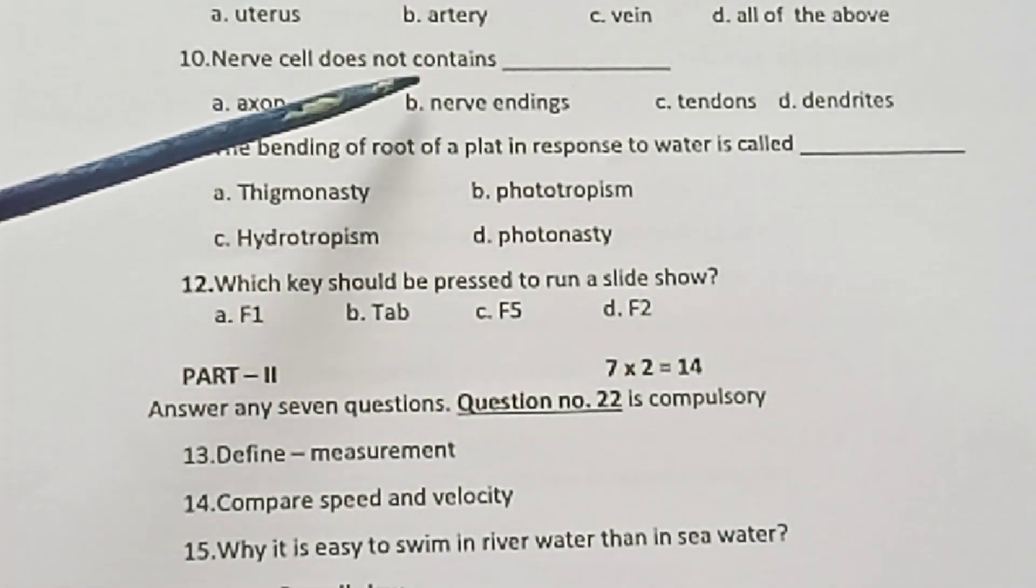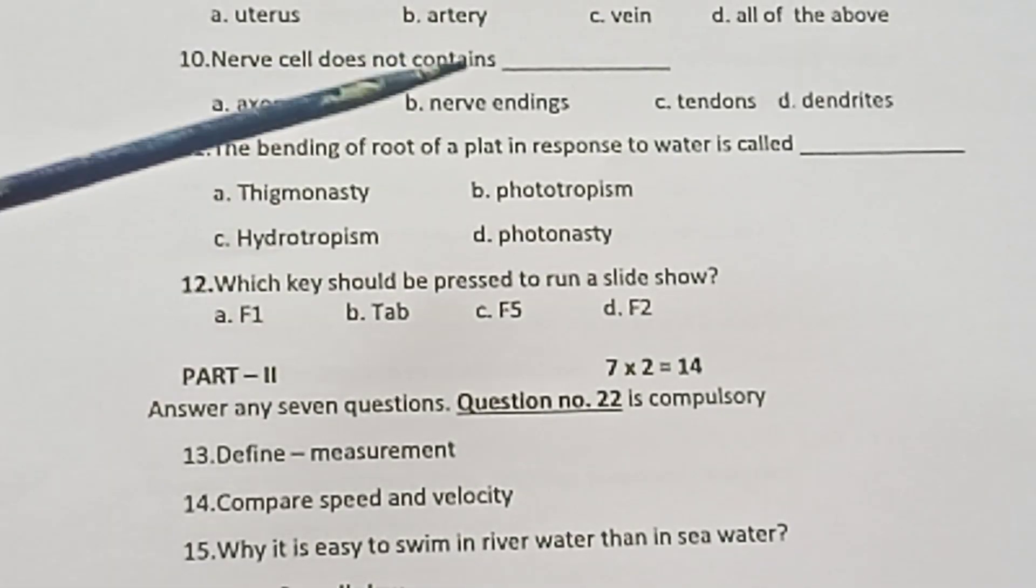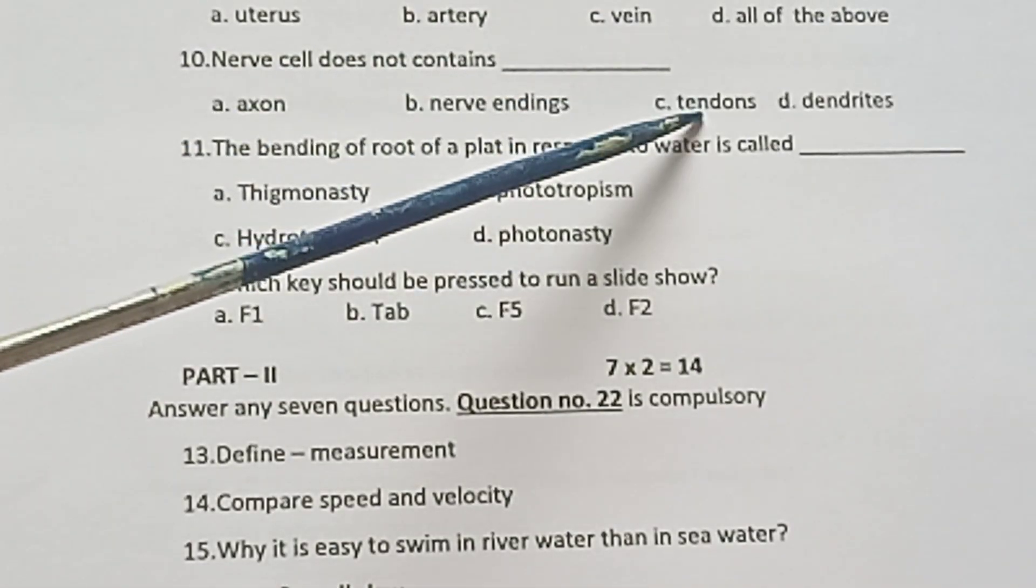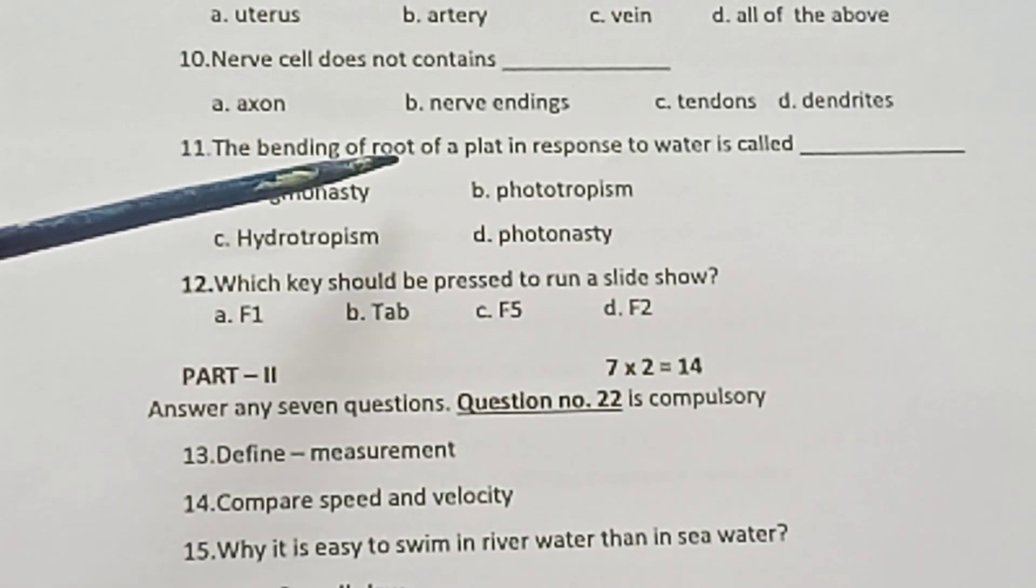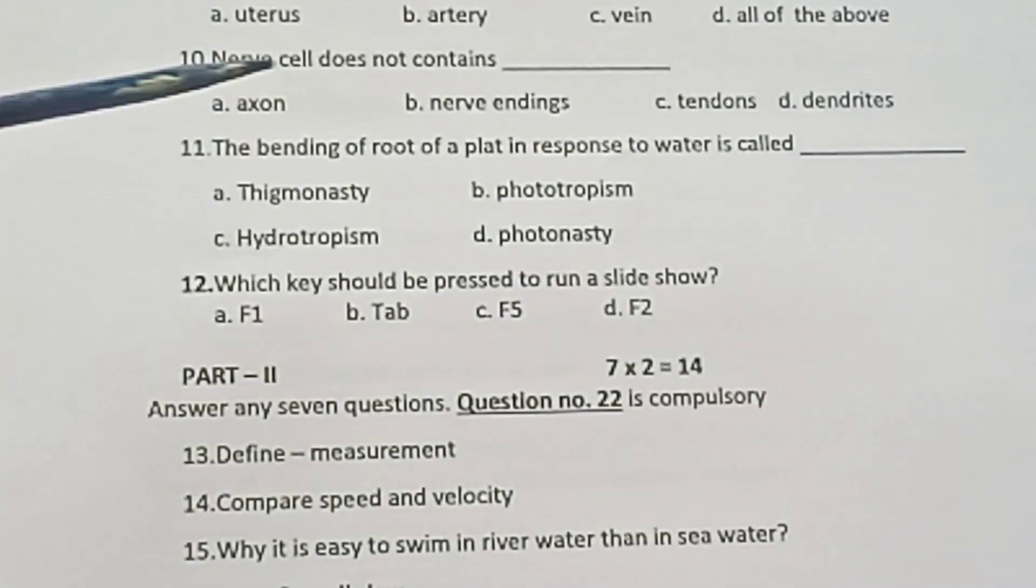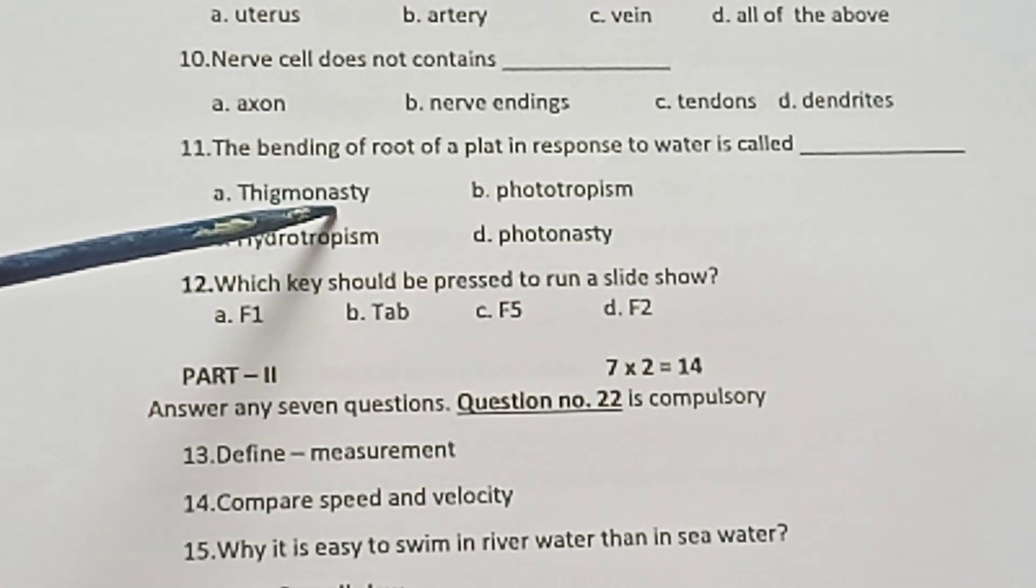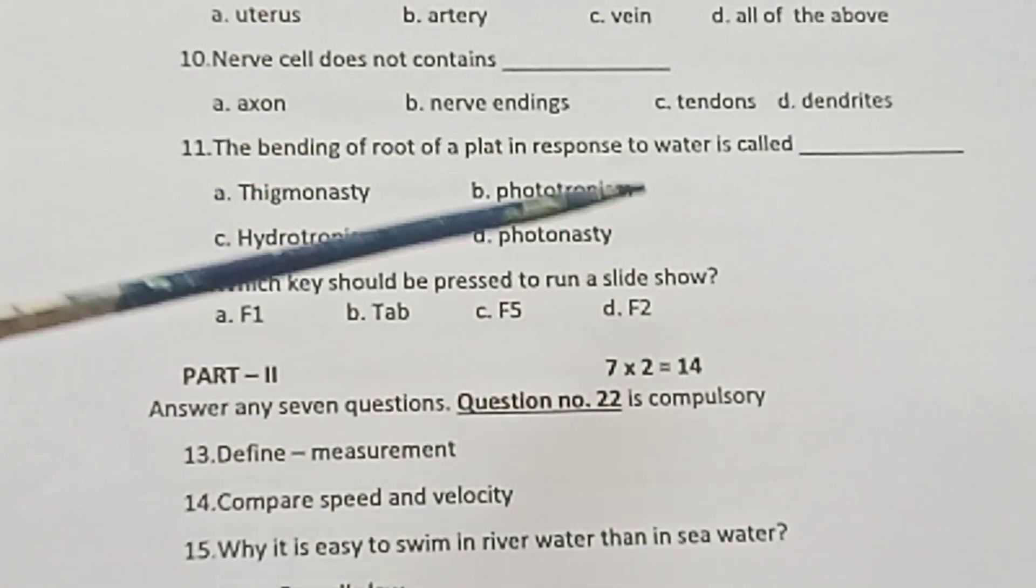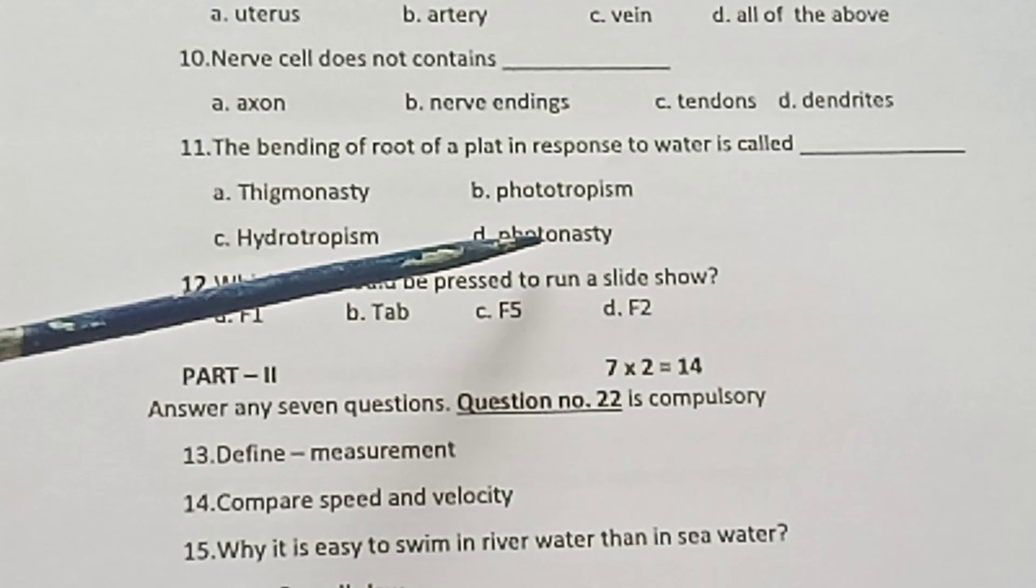Question 10: Nerve cell does not contain: axon, nerve endings, tendons, or tendrils. Question 11: The bending of root of a plant in response to water is called: thigmonasty, phototropism, hydrotropism, or photonasty.